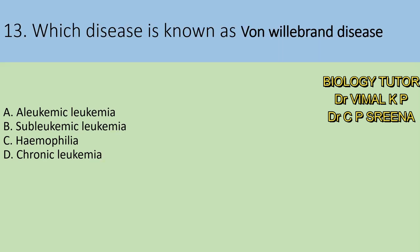Thirteenth question: which disease is known as Von Willebrand disease? A. Aleukemic Leukemia, B. Subleukemic Leukemia, C. Haemophilia, D. Chronic Leukemia. Here answer is C — Haemophilia is known as Von Willebrand disease.